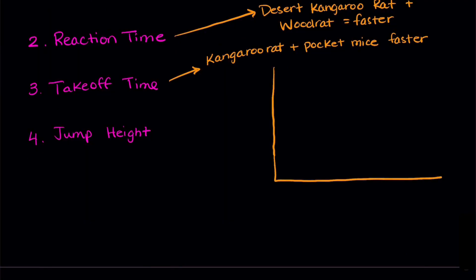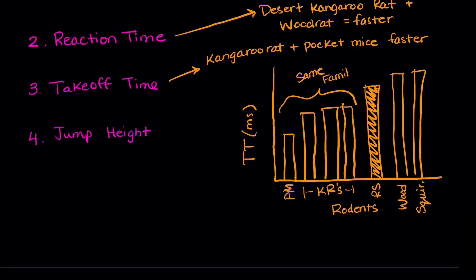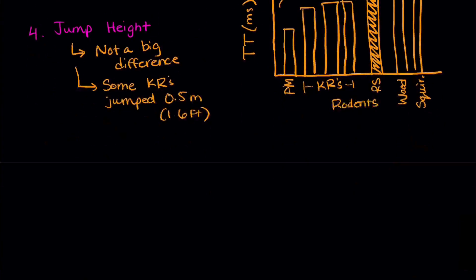So you can see that here in a graph. On the x-axis are the different rodents and the rattlesnake strike speed, so that's how fast a rattlesnake is. On the y-axis is takeoff time in milliseconds. These species are all in the same family, which we'll talk about in a minute. The researchers also found that there wasn't a huge difference in jump heights, but a few of the kangaroo rats did jump almost a half a meter or 1.6 feet.